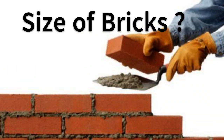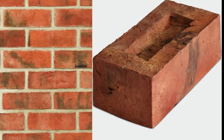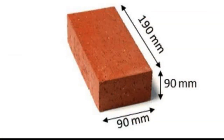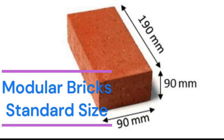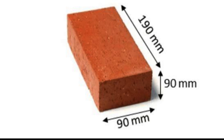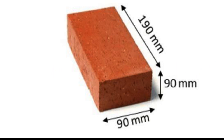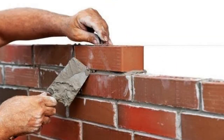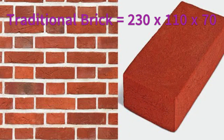Question 1: Can you tell us the size of different bricks? The size of modular bricks for their standard size is 190 mm x 90 mm x 90 mm. The size of modular bricks for their nominal size is 200 mm x 100 mm x 100 mm. The size of non-modular or traditional bricks is 230 mm x 110 mm x 70 mm.